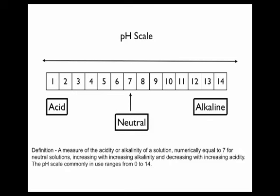A quick definition is a measure of the acidity or alkalinity of a solution, numerically equal to 7 for neutral solutions, increasing with increasing alkalinity, and decreasing with increasing acidity. The pH scale commonly in use ranges from 0 to 14. Basically anything on the low part of the scale is an acid. Anything on the high part of the scale is an alkaline or a basic.